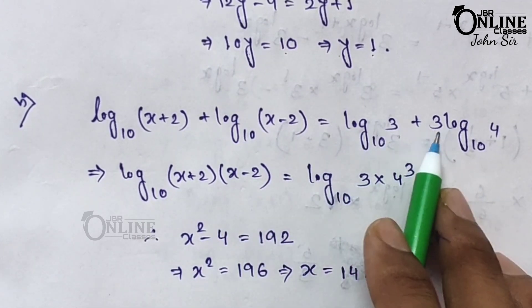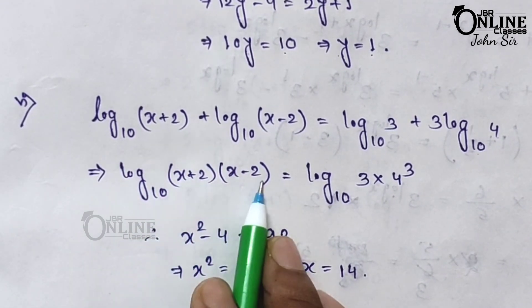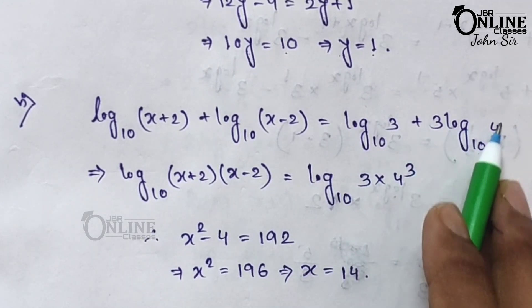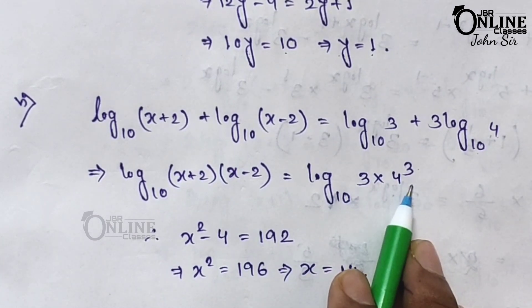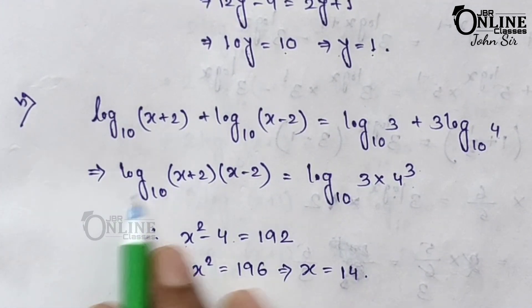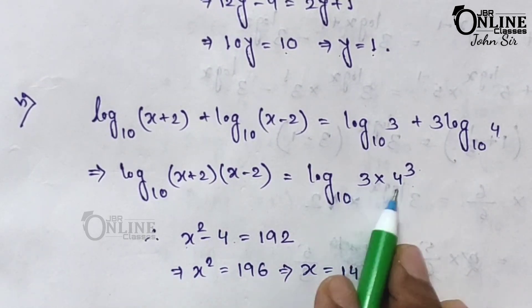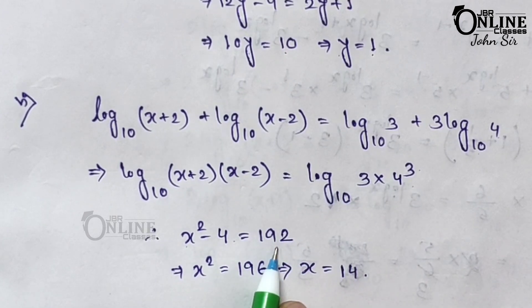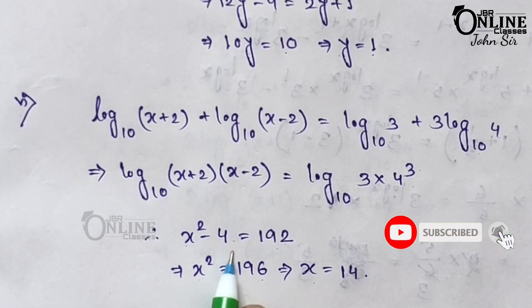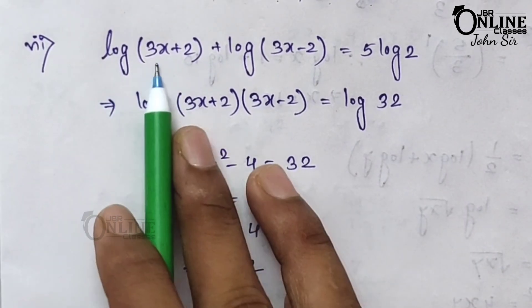Sixth equation: log(x + 2) + log(x − 2) = log 3 + 3 log 4. Left side: log[(x+2)(x−2)] = log(x² − 4). Right side: 3 log 4 means log(4³), so right side = log[3 × 64] = log 192. Comparing: x² − 4 = 192, so x² = 196 and x = √196 = 14.